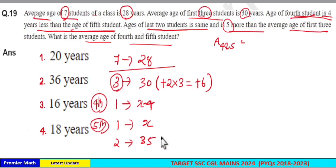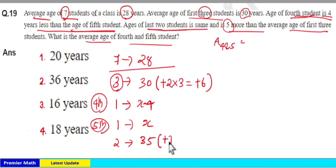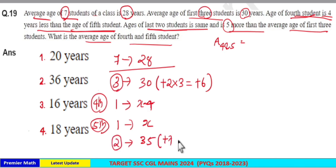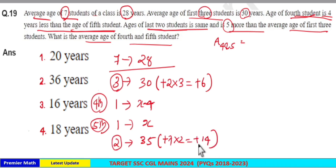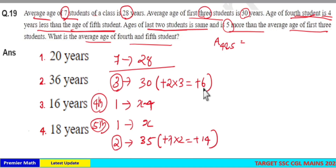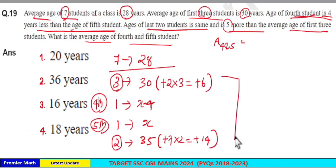Similarly, the last 2 students have an age of 35, which is plus 7 greater than the common average of 28. This plus 7 increment applies to 2 students, so 7 times 2 gives a total increment of 14 in the sum of ages of these 2 students. The total increment is therefore 6 plus 14, which equals 20 years.